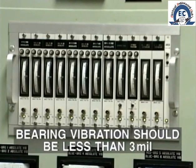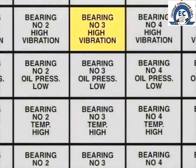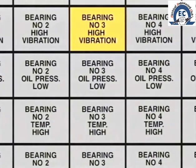In very general terms, the magnitude of bearing vibration should be less than three mil. In many machines, an alarm will be enunciated if any bearing vibration exceeds five mil.